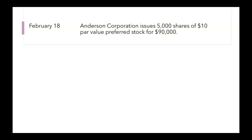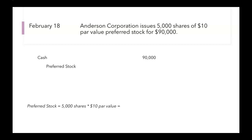On February 18th, Anderson Corporation issues 5,000 shares of $10 par value preferred stock for $90,000. It's pretty similar to what we did for the common stock. What are we getting as a company? We are getting cash. And why are we getting this cash? Because we issued preferred stock. So we debit our cash and we credit preferred stock. We debit cash $90,000, and for preferred stock we take 5,000 shares times the $10 par value, giving us $50,000.